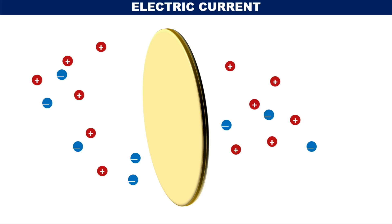We can define a surface area, which will be represented as shown in the diagram. The surface can have any shape. We are going to consider how many charges will be crossing the given surface in a given interval of time in the reference direction. Here, we are going to choose some direction as a reference direction. The choice of the reference direction depends on the observer.